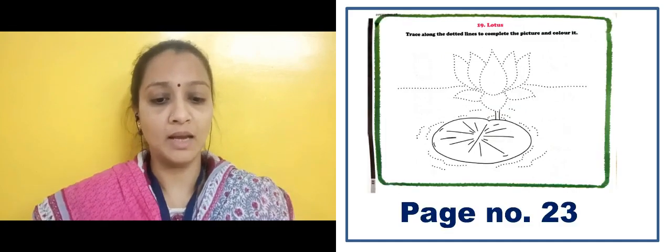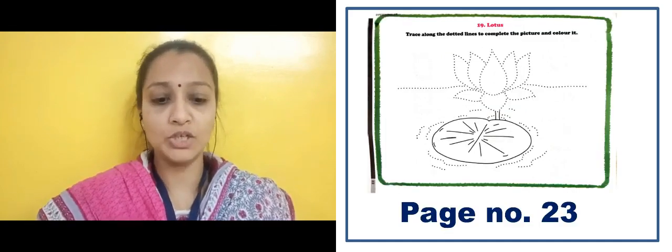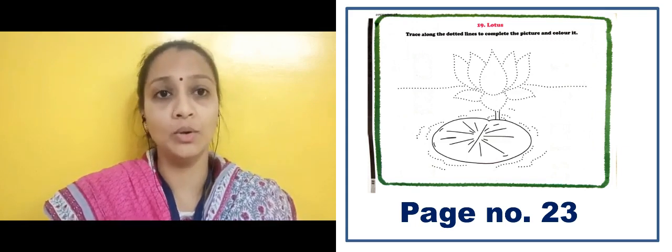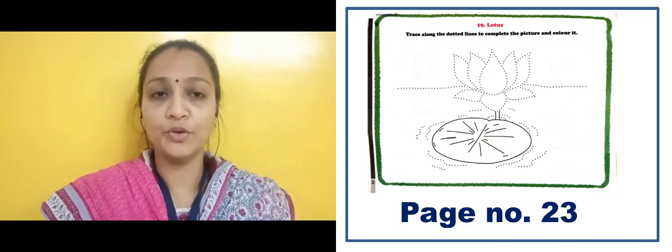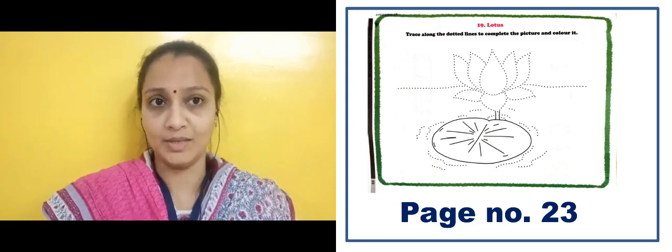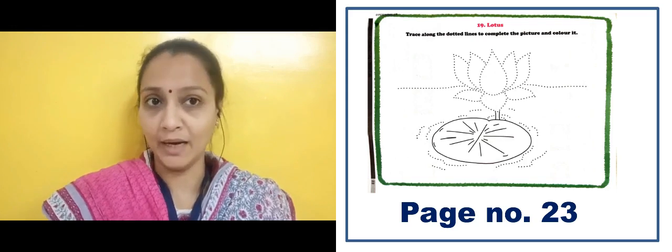Here students, you can see an activity on your page number 23. Here there is an image of a Lotus. First of all, you have to trace along the dotted line to complete the picture and color it. Lotus is in pink color and its leaf is green. Lotus grows in a pond.